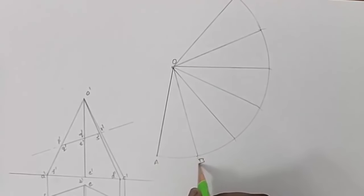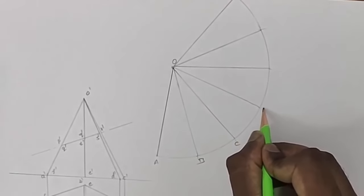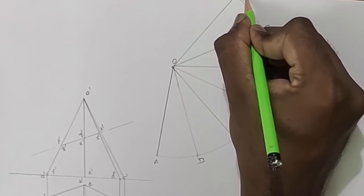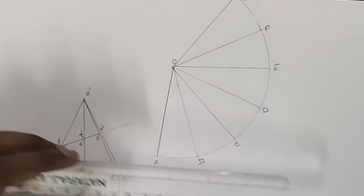This is A, B, C, D, E, F, again A. Transfer the cut points to the true line.